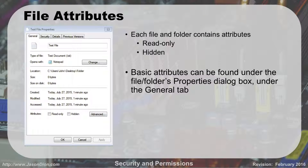File attributes: we talked about the attrib command back in Windows. Each file and folder has its own attributes. The two most basic are read-only and hidden, as you can see in this picture — neither of which are checked, so this file has neither attribute. Basic attributes are found under the file and folder property box under General. If you click Advanced, you'll see additional attributes like system and archive. This is just a graphical representation of what's been set by the attrib command.